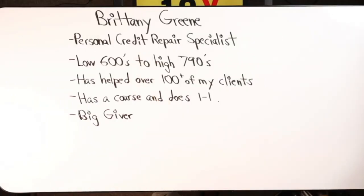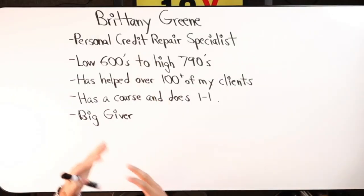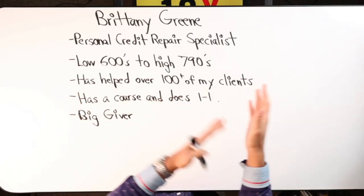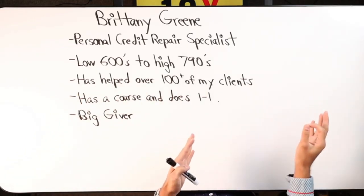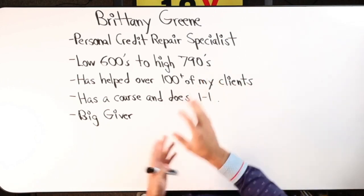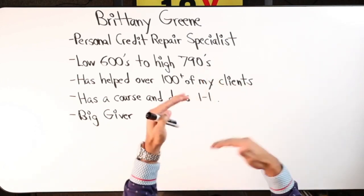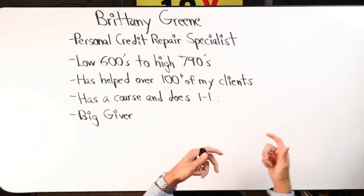Brittany Green is a personal credit repair specialist. She took me from low 600s to nowadays nearly at 800 credit score. I haven't broke it yet. 25 years old. But I'm at a high 790. I do velocity banking. I use credit a lot.